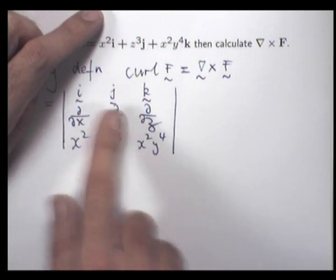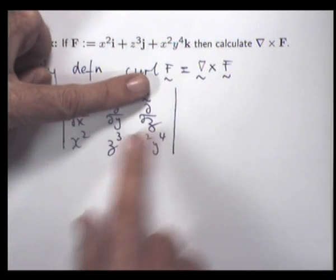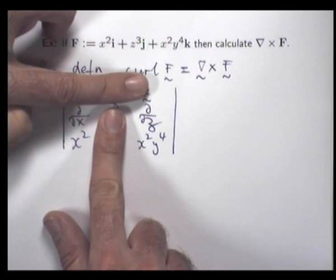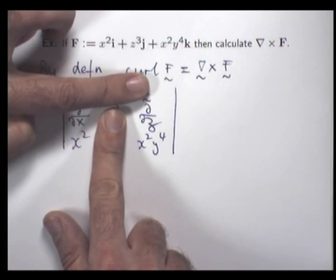Then I move on to J. J is in the first row and the second column. So what I do is I multiply J by the determinant of what's left, not forgetting the minus sign in front of the J.